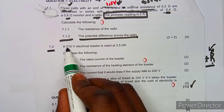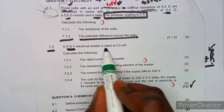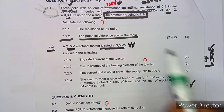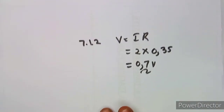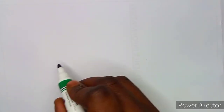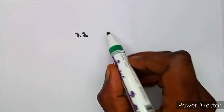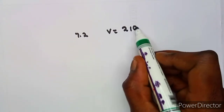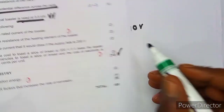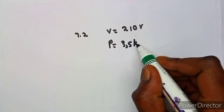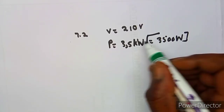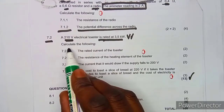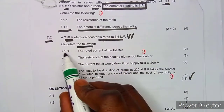Moving on to question 7.2: a 210-volt electrical toaster is rated at 3.5 kilowatts. Let's list the information — voltage is 210 volts, and the power rating is 3.5 kilowatts, which is equivalent to 3500 watts.